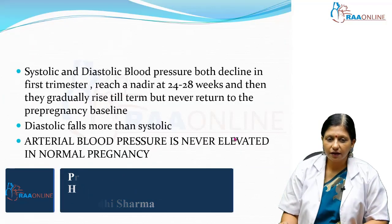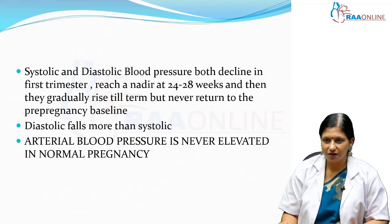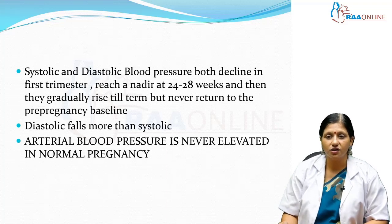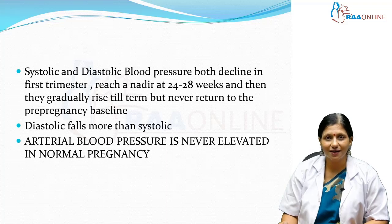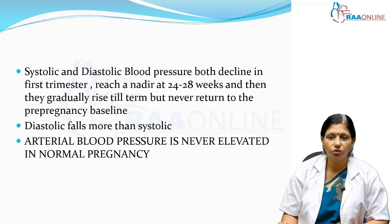In a normal pregnant woman, because of the fall in the systemic vascular resistance as a result of progesterone in normal pregnancy, there is a fall in the systolic and diastolic blood pressures. Both systolic and diastolic blood pressure decline in normal pregnancy, reaching a nadir at 24 to 28 weeks.